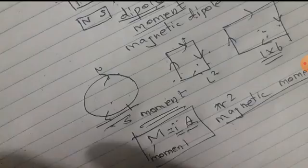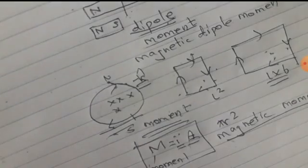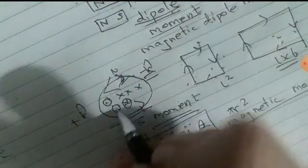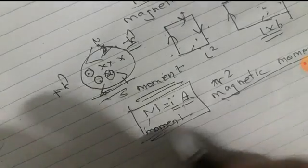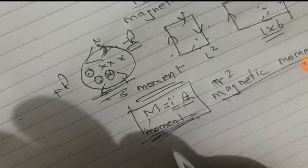The direction is found using the right-hand curl rule. Look at the current direction in the loop. Using the thumb rule — if you curl your fingers in the current direction, the thumb points in the direction of the magnetic moment. If curling gives minus k-cap, it is in the negative z direction; if plus, then plus k-cap.